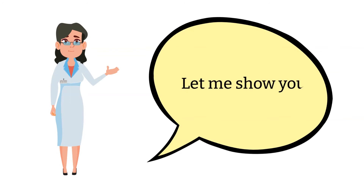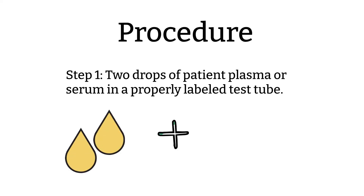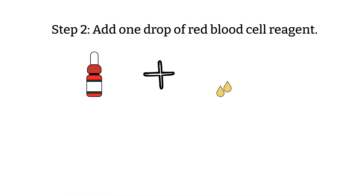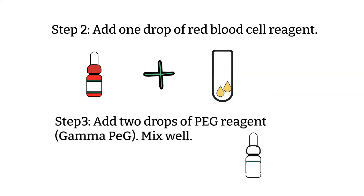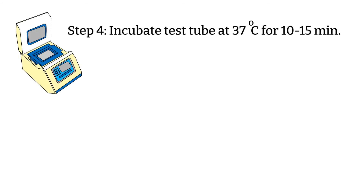Let's get to know how we use PEG. Procedure. Step 1: Add two drops of patient plasma or serum in a properly labeled tube. Step 2: Add one drop of reagent red blood cells. Step 3: Add two drops of PEG reagent and mix well. Step 4: Incubate the test tube at 37 degrees Celsius for about 10 to 15 minutes.